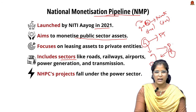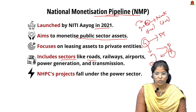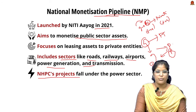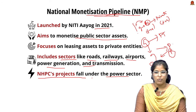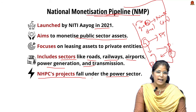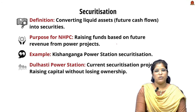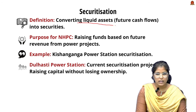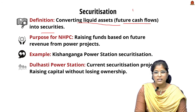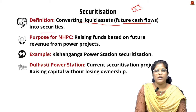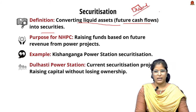The sectors covered under NMP include roads, railways, airports, power generation, and power transmission. The NHPC project falls under the power sector. Securitization, related to NMP, involves converting future cash flows from an asset into marketable securities or bonds — the same concept as leasing, but the fundraising is done through a security or bond instead of a lease document.